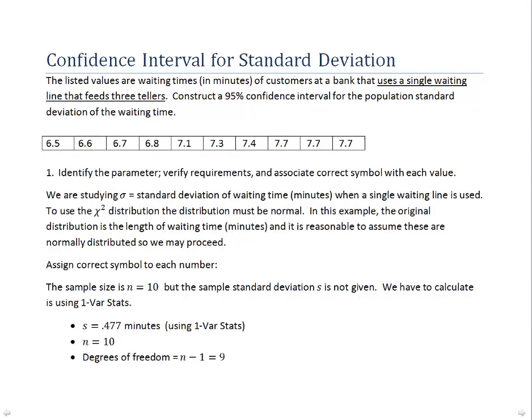So let's begin with the first situation where the bank is using a single waiting line that feeds all three tellers. First, as we always do in these problems, we verify the requirements and identify the parameter. Well, in this case, we're studying sigma. It's a standard deviation of the waiting time and it's measured in minutes. And this is the sigma for the case where a single waiting line is used.